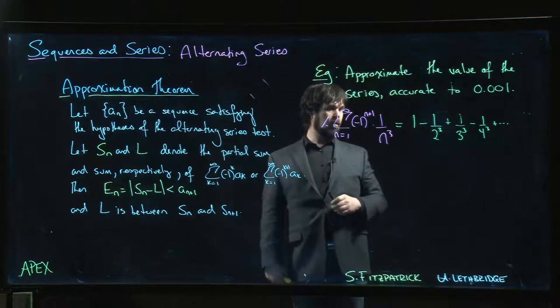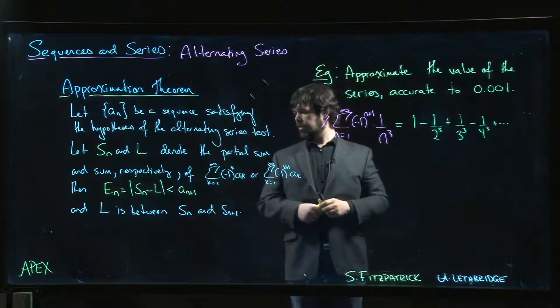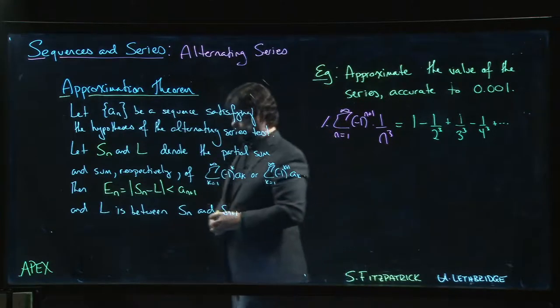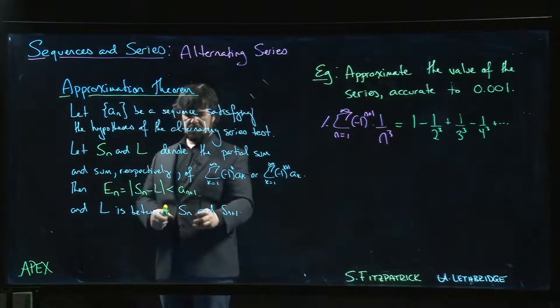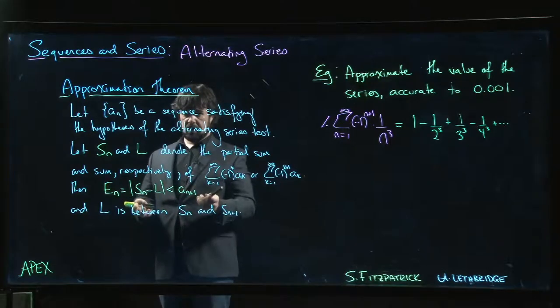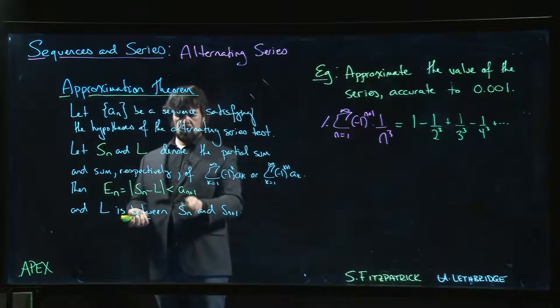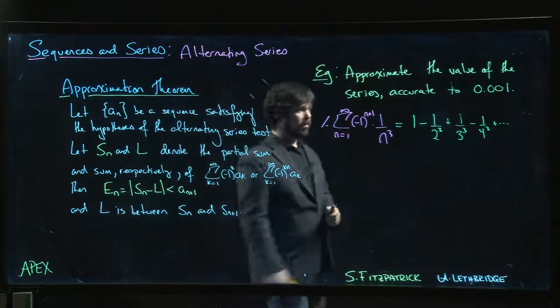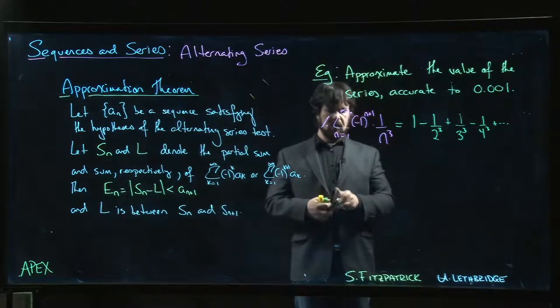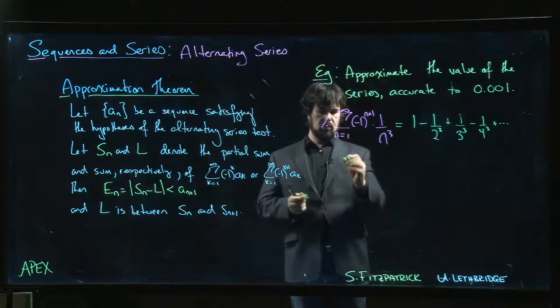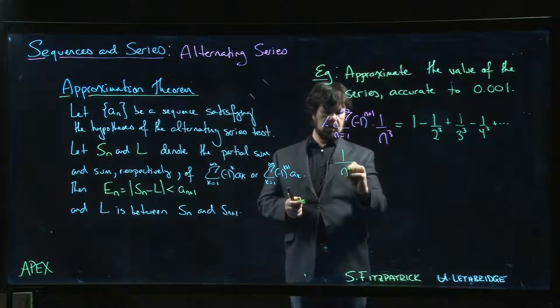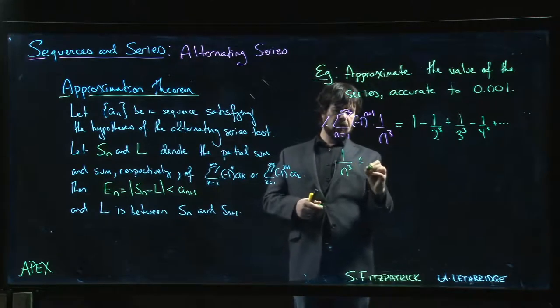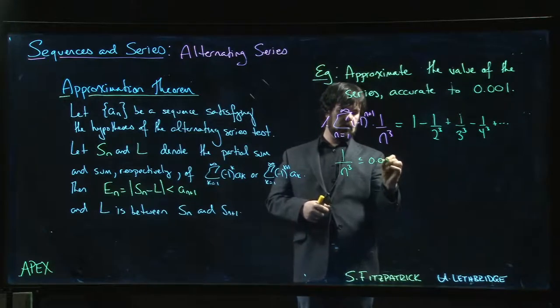Well, the estimation theorem here says that it's always the next term in the sequence that tells us our accuracy. So we say, okay, when do we get to 0.001? So when do we have 1 over n cubed less than or equal to 0.001?